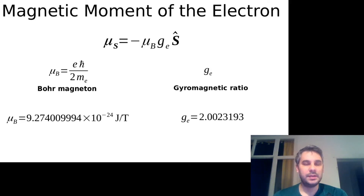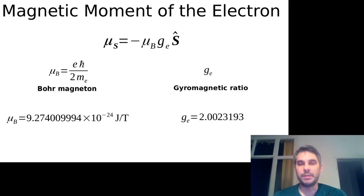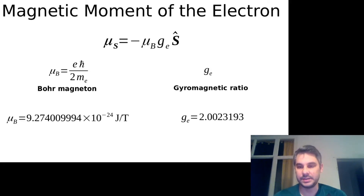The Bohr magneton is the product of the electron charge times the reduced Planck's constant divided by two times the mass of the electron. It has a value of 9.274 times 10 to the power of minus 24 joules per tesla. Joules is a unit of energy and tesla is a unit of magnetic field. The gyromagnetic ratio is a dimensionless constant; it has classically a value of 2, but because of high-level electrodynamic corrections it deviates slightly from 2 and has a value of 2.0023193, with several more significant figures.